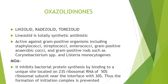Linezolid is active against gram-positive organisms including staphylococci, streptococci, enterococci, gram-positive anaerobic cocci, and gram-positive rods such as Listeria monocytogenes. The mechanism of action is that linezolid inhibits bacterial protein synthesis by binding to a unique site located on the 23S ribosomal RNA of the 50S ribosomal subunit near the interface with 30S, thus preventing the formation of the initiation complex.